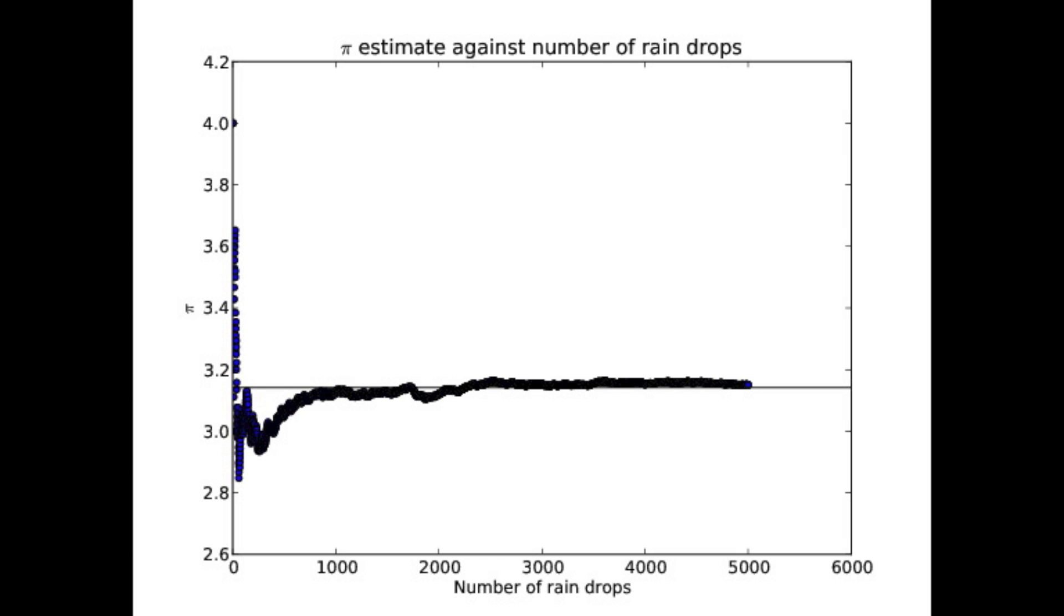And if we take a look at the actual estimate of pi as a function of the number of raindrops we drop, we see that once we get to about 3,000 raindrops, we're pretty close. That black horizontal line is the actual value of pi.